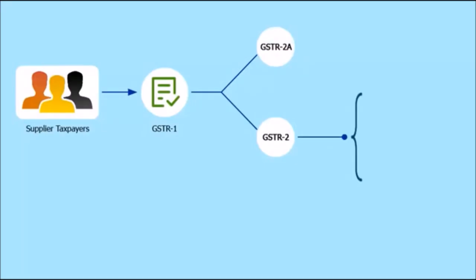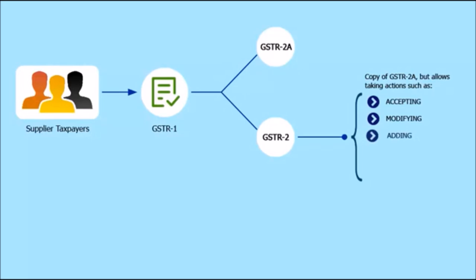GSTR-2 is also a copy of GSTR-2A, except that it allows the receiver to take actions on the submitted invoices, which includes accepting, modifying, adding, or rejecting the invoice details uploaded by suppliers, or keeping the invoices pending for action. The receiver taxpayer can view the invoice data in GSTR-2 almost real-time upon upload, even before the due date of filing GSTR-1 by the supplier taxpayer.